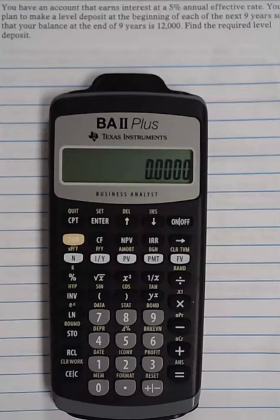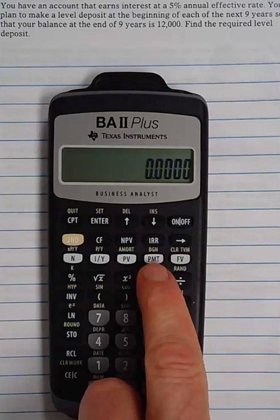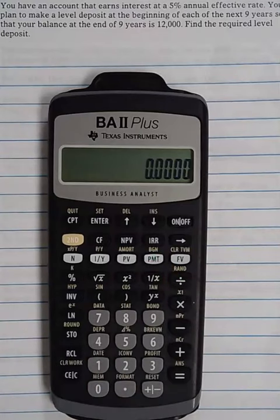The first thing we need to do with our calculator before we do anything else is make sure that we set the calculator to the mode that it knows the payments are supposed to be put in at the beginning of the periods rather than the end. You'll see that right above the PMT button, there's BGN. That's what we need to get into to be able to set the calculator from what's referred to as end mode into begin mode. It's just telling the calculator that the deposits are going to be coming in at the beginning of the period rather than the end of the period.